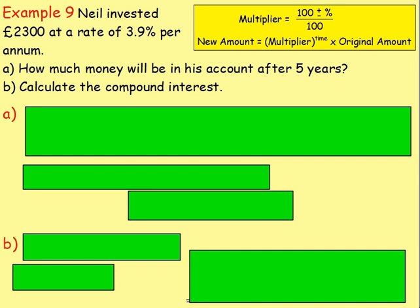Example nine. Neil invested £2,300 at a rate of 3.9% per annum. Per annum means per year. Part A: how much money will be in his account after five years? And part B: calculate the compound interest. So, once again, it's 3.9% per annum — per year. We can use multipliers to work out the value after five years.